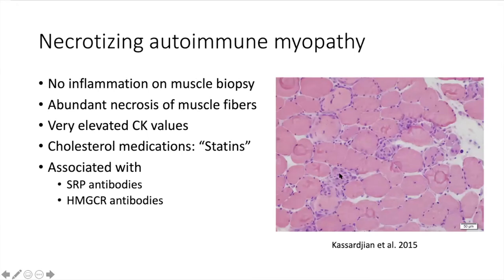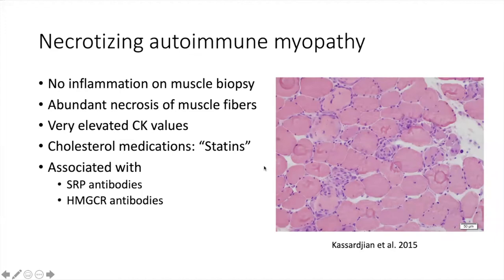Necrotizing autoimmune myopathy is very different because there isn't inflammation — that's why the term inflammatory myopathy is probably not the best term for this category. Rather than inflammation, what you have is an immune attack on certain muscle fibers and they end up dying — they necrose, hence the name. Patients will often have very high CK values, usually higher than the other immune myopathies. This condition has gotten a lot of attention because it's associated with the cholesterol medication statins like Lipitor. There are two recognized antibodies: SRP and HMGCR. HMGCR is actually the enzyme that the statins target, so there is a clear connection between why people on statins might get this type of myopathy and the antibody that's produced.